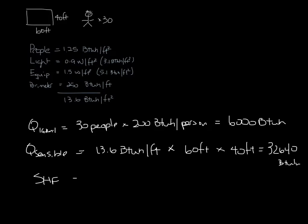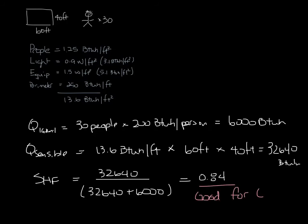Now we can calculate the sensible heat factor, which is 32,640 sensible load divided by the total load, which is 6,000 plus 32,640, and that equals 0.84, which makes it good for a chilled beam application.